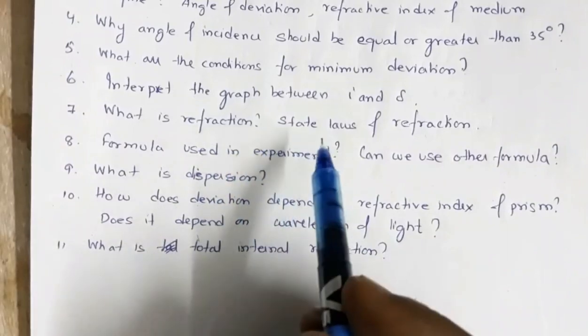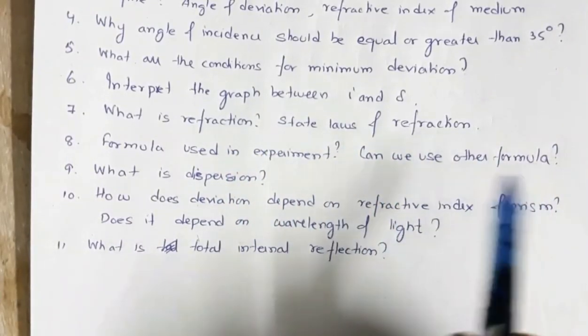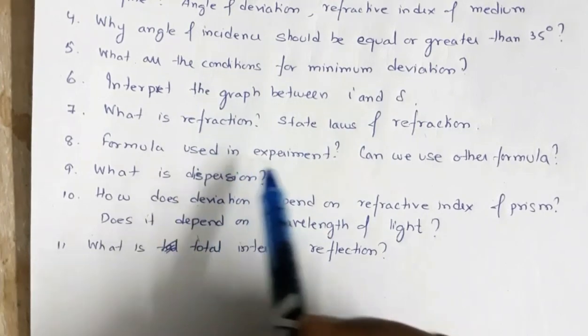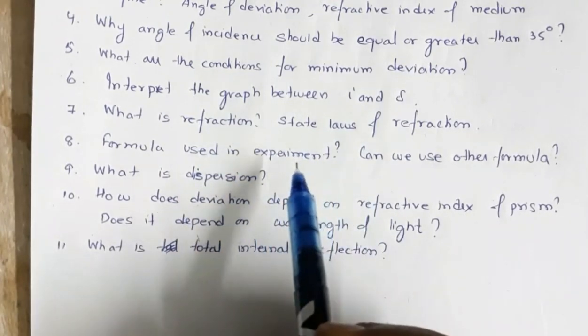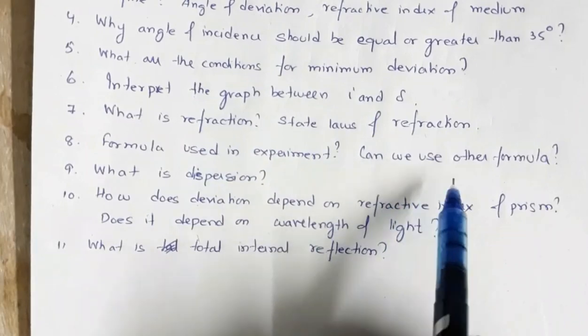Then, definition of refraction, laws of refraction, Snell's law, these things they may ask. What is the formula used in the experiment? That is, mu is equal to sine a plus delta m by 2 divided by sine a by 2. Can we use other formula?